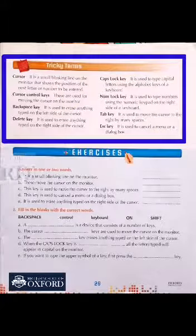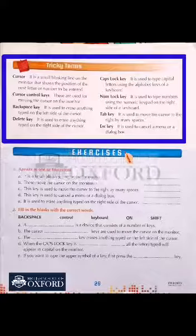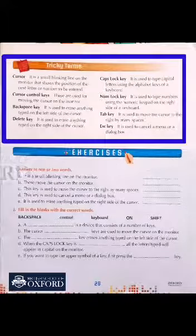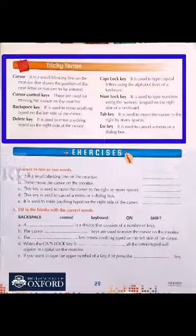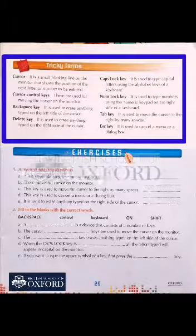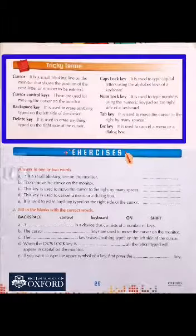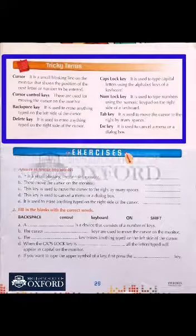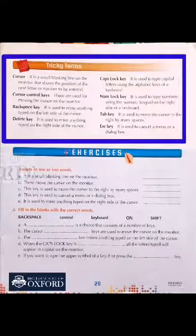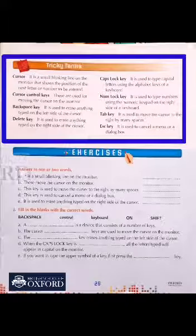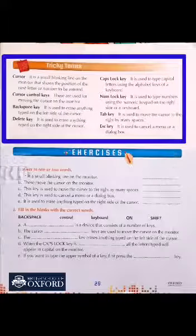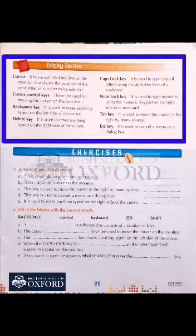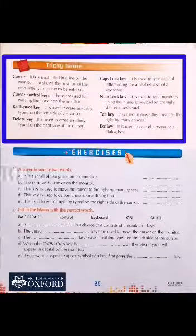Cursor: It is a small blinking line on the monitor that shows the position of the next letter or number to be entered. Cursor kya hoti hain? Jab hum computer ke uper koi kaam kar rahe hain, koi typing kar rahe hain, to wahan pe ek line aati hain joh blink karti rehti hain. Us ka kaam ye hoti hain ke woh hume bataati hain ke ab joh hum number ya letter likhen ge, us ki position kya hogi? Agar woh line nahi hoti, to hume pata hi nahi chale ga ke hum likhna kahan rahe hain. So cursor ka function: it is a small blinking line on the monitor that shows the position of the next letter or number to be entered.